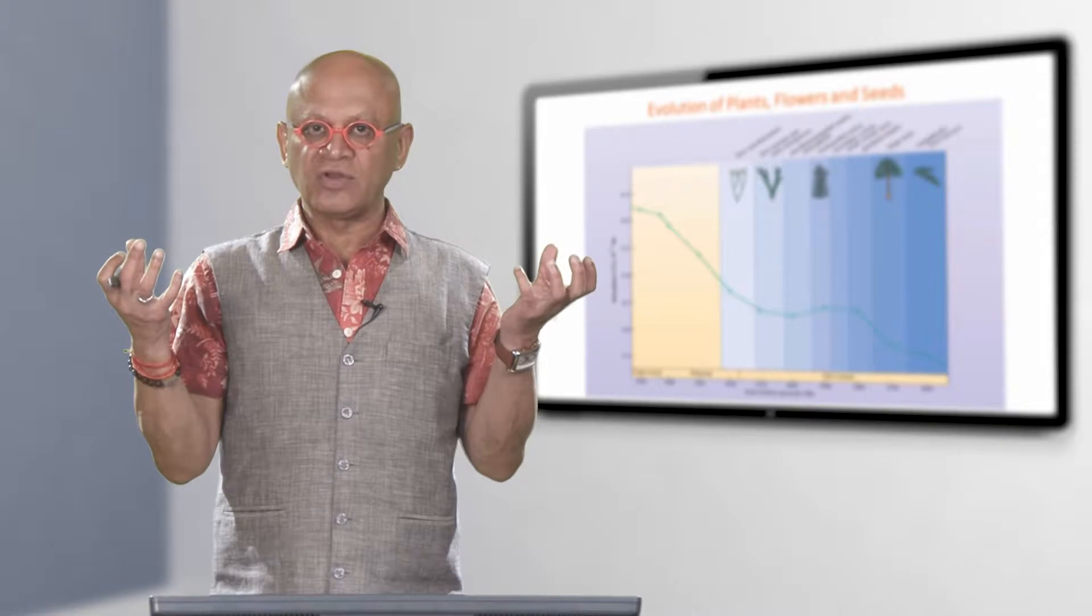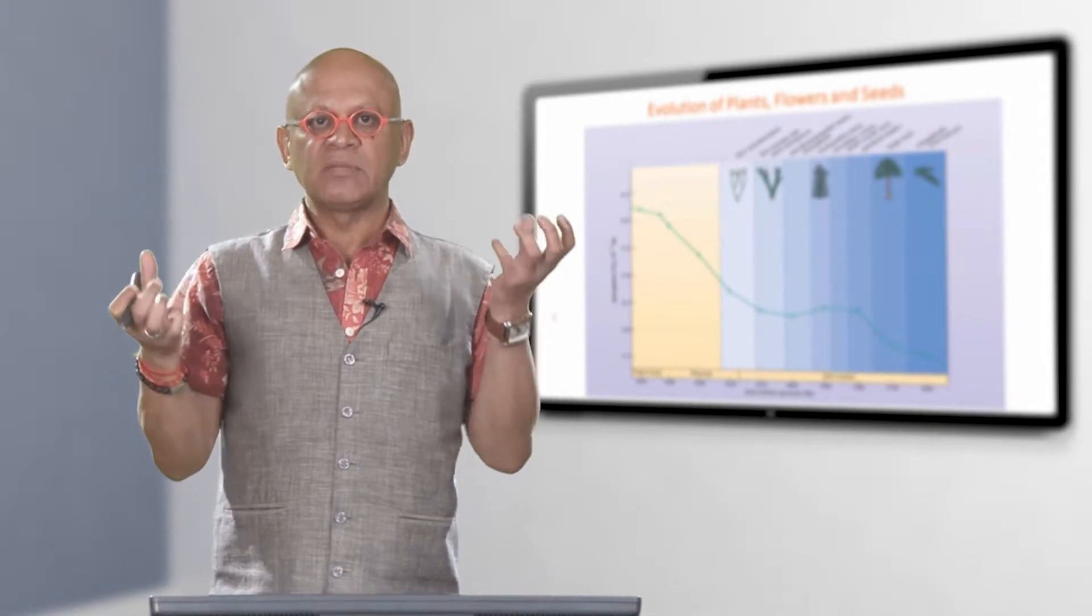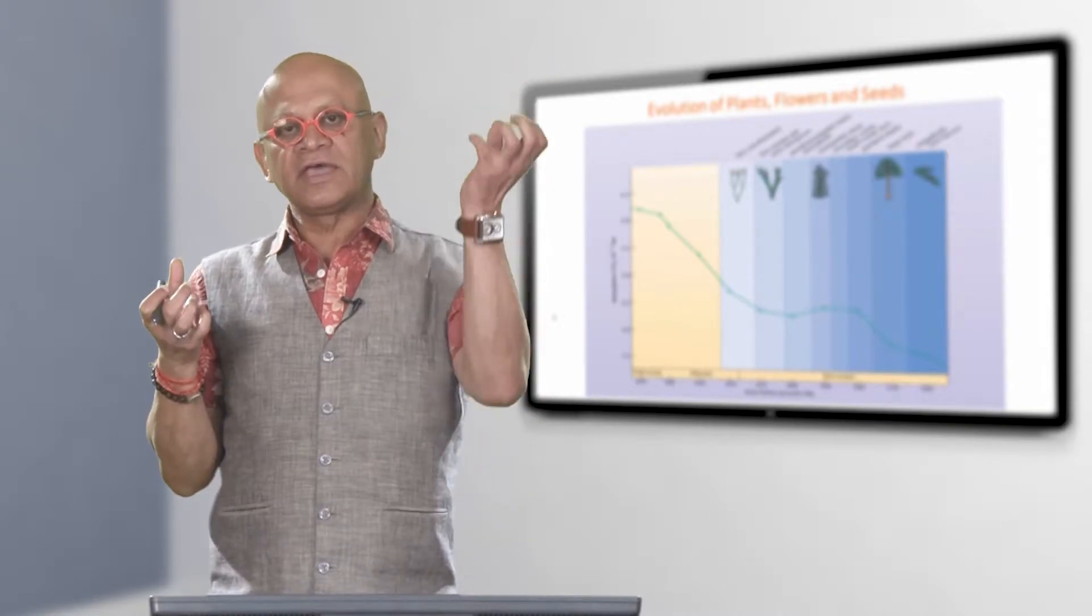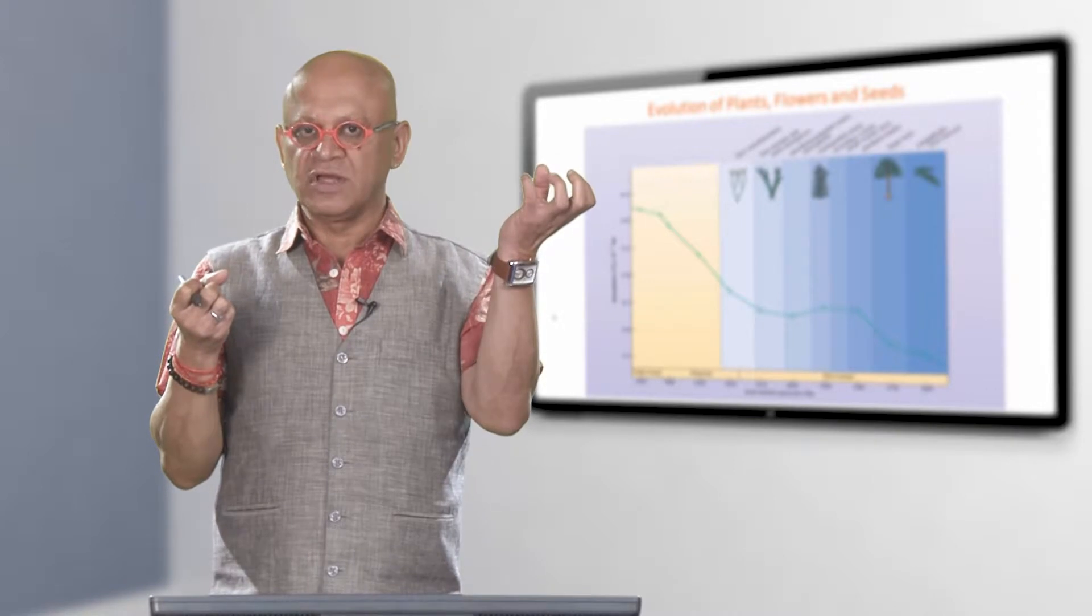Mitochondria allow you to burn sugar and produce energy. Plastids allow you to take energy from the sun and fix carbon dioxide and produce sugar.